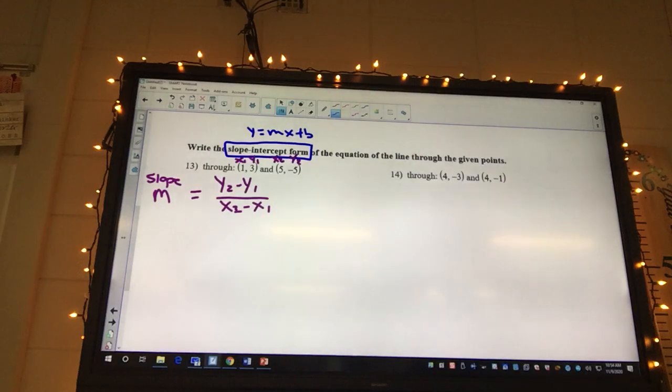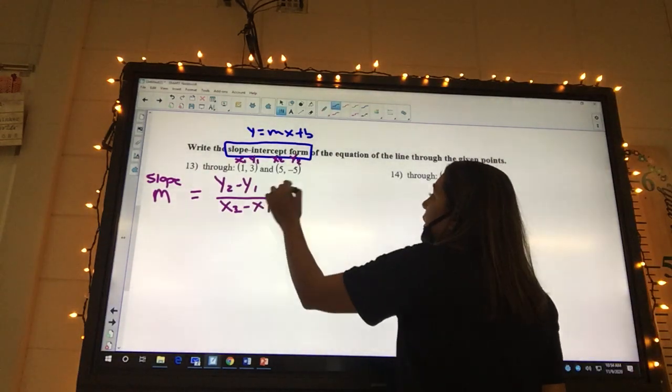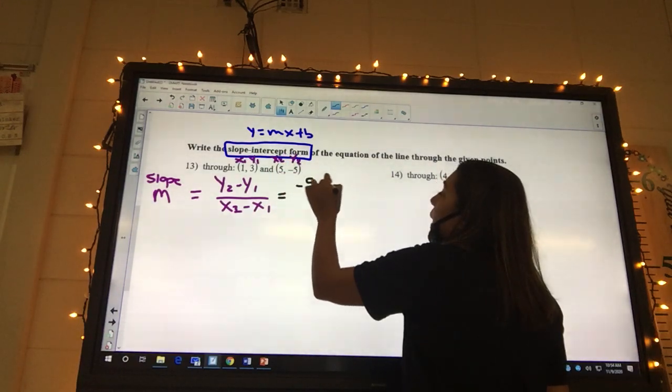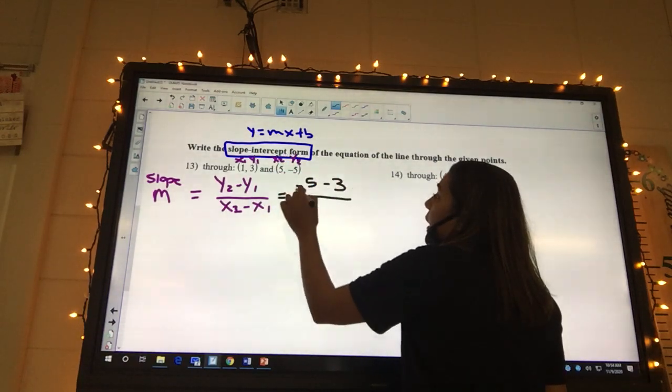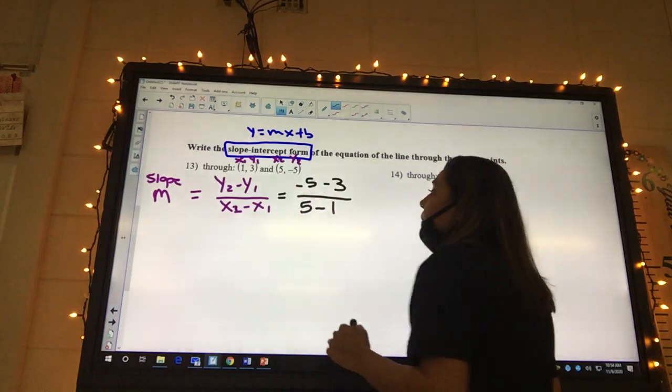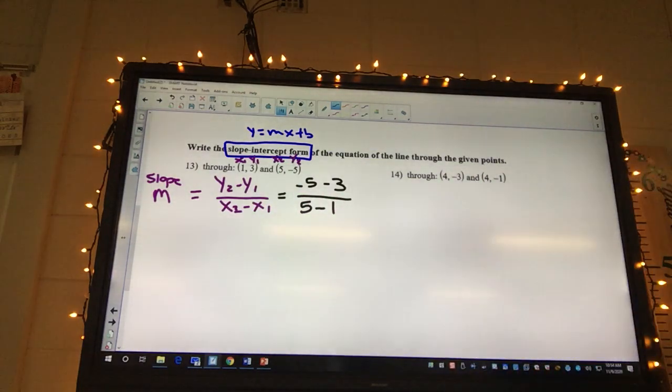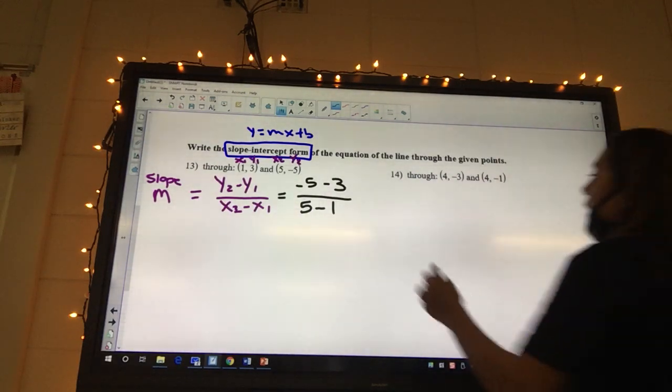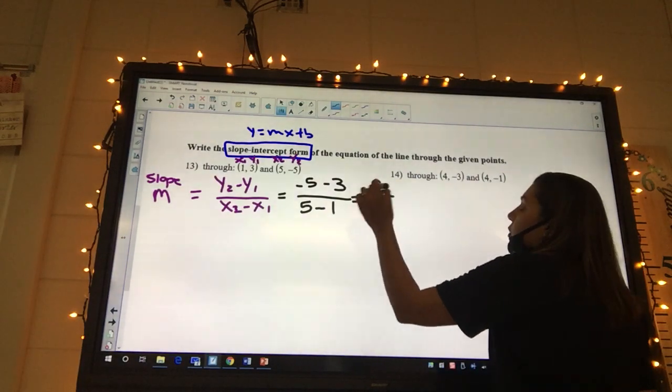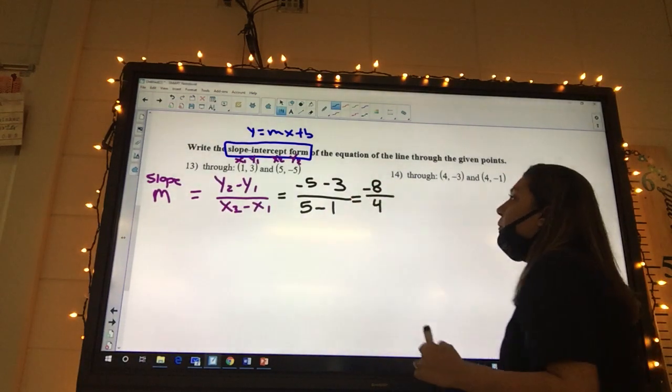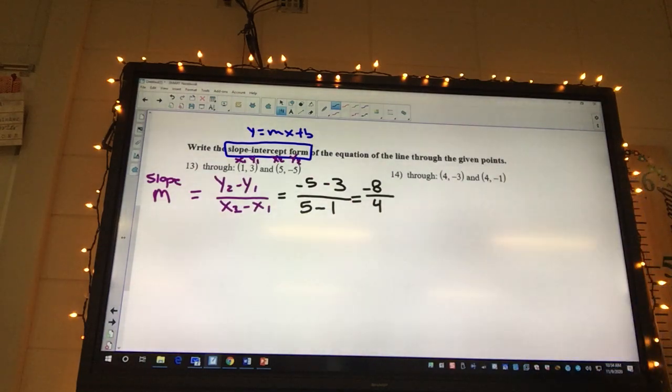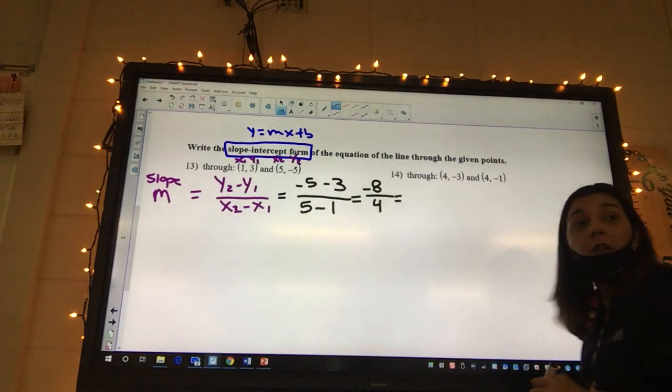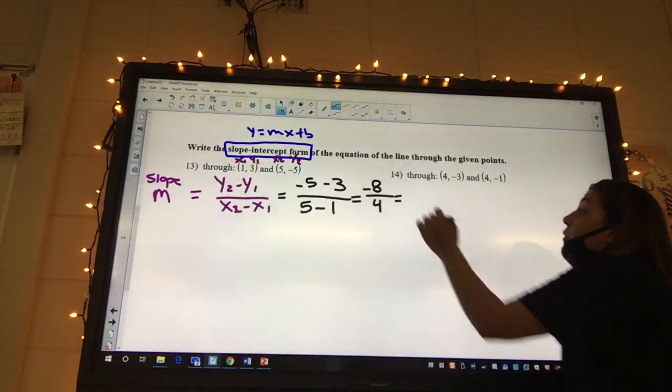Make sure that you label these ones. So y2 is negative 5 minus y1 which is 3, x2 is 5 minus x1 which is 1. You can hit that fraction button in calculator unless there's a minus minus, you need to change those to a plus first. On the top we're going to get negative 8 over 4.